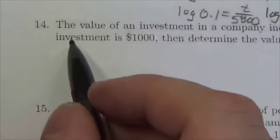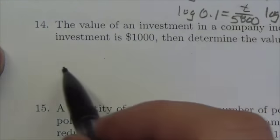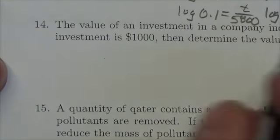Hi everyone. This question says the value of an investment in a company increases by 4% per annum compounded annually. If the initial value of the investment is $1,000, then determine the value to the nearest cent in 12 years.